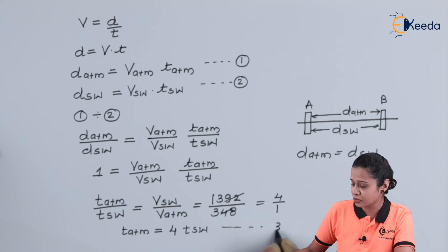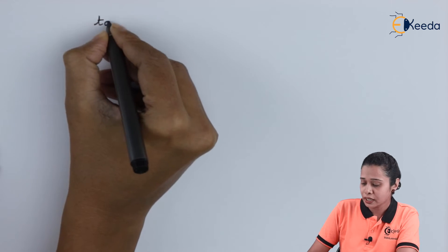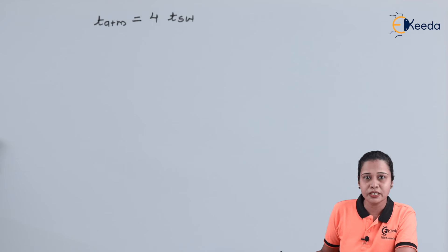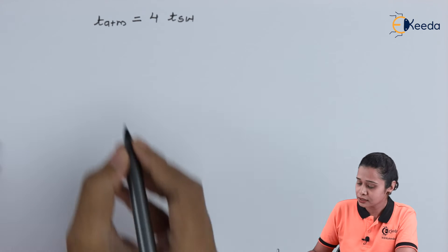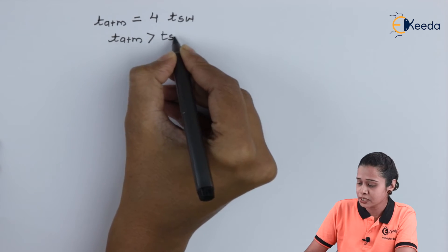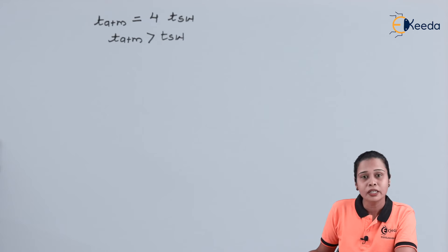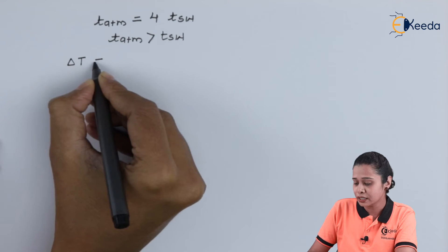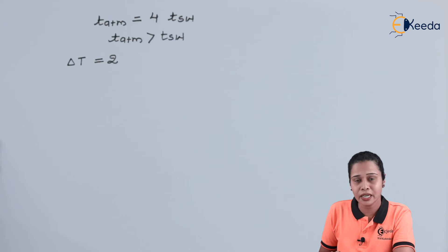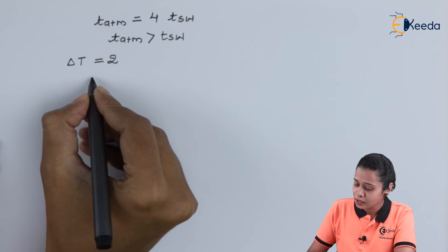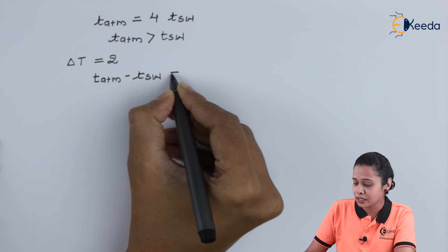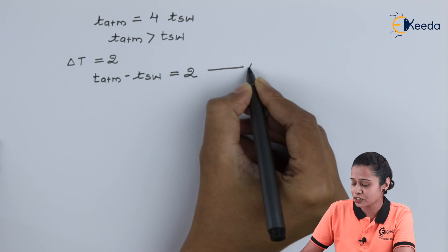From this equation, T_atmosphere = 4 × T_seawater (equation 3). This means time in atmosphere is greater than time in seawater. The time interval delta T = 2 seconds is the difference between receiving the signal through the atmosphere and through seawater. So we write: T_atmosphere − T_seawater = 2 (equation 4).